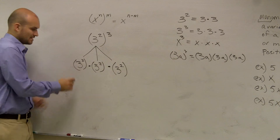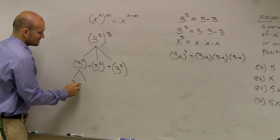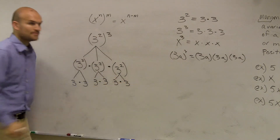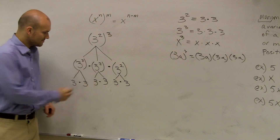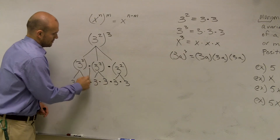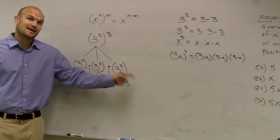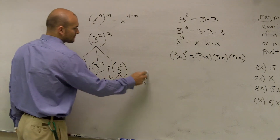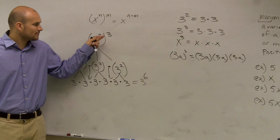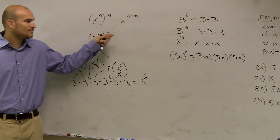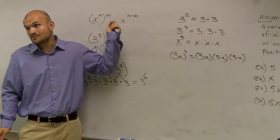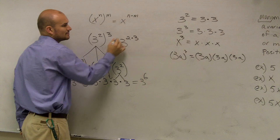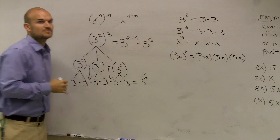So if I have 3 squared cubed, what does 3 squared represent? It's 3 times 3, three separate times: 3 times 3, times 3 times 3, times 3 times 3. So that equals 3 times 1, 2, 3, 4, 5, 6 — that's 3 to the sixth power. How do we go from 3 squared raised to the third power to get 6? You don't get it by adding — that was the other rule. You get there by 2 times 3, which equals 3 to the sixth power.